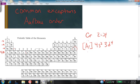However, experimental evidence shows that that is not the correct electron configuration, but rather the correct electron configuration for chromium is 4s1 3d5.